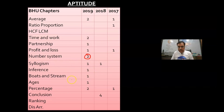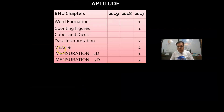Inference: 2019, both streams. Ages: 2019. Percentage: 2 questions in 2019, 1 question in 2017. Statement and Conclusion: 4 questions in 2018. Word Formation: 1 question in 2017. Counting of Figures: 1 question in 2017. Cubes and Diseases (Dice). Data Interpretation (DI): major part — 2 questions in 2017. Alligation and Mixture: 2 questions. 2D and 3D Mensuration: 1 and 3 questions. So you can see the last years' pattern.